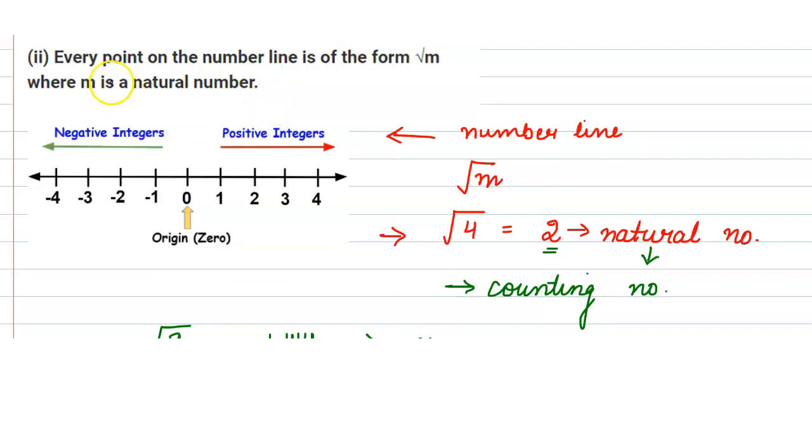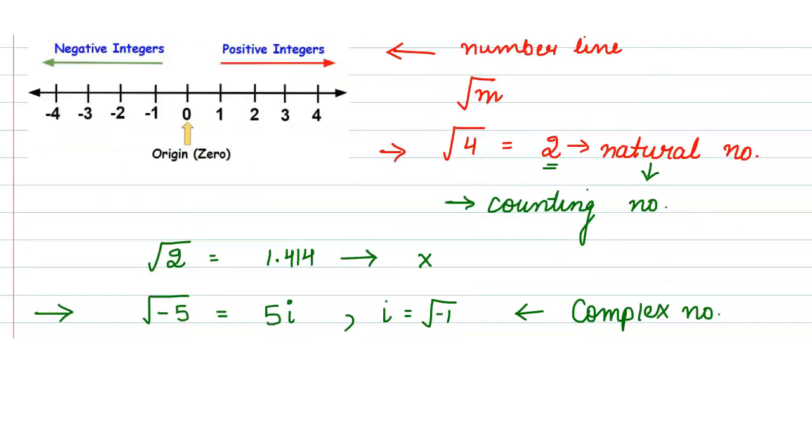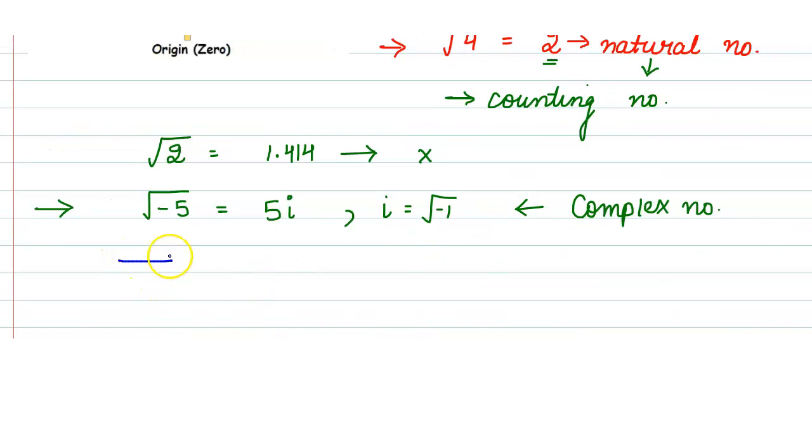But in the statement you can see that it is given that every point on the number line is of the form root m. They are saying that every number or point on the number line can be written in the form of root m where m is a natural number.